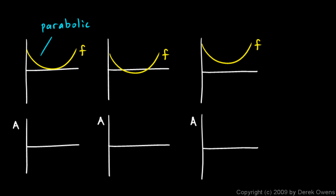A few more examples of graphing the area under a function, and then I'll make a few comments. In each of these cases, we are graphing the area under function f. What we're doing is imagining a vertical line moving to the right. As it moves to the right, it sweeps out some area under the graph. At any point x, there's a certain amount of area that has been swept out up to that point, and that value of a changes as x changes — so that value of a is a function of x that can be graphed.